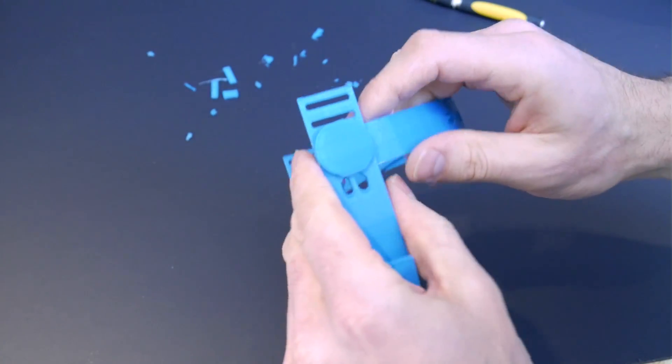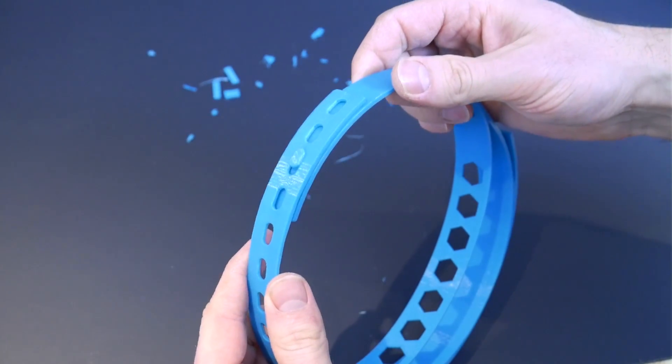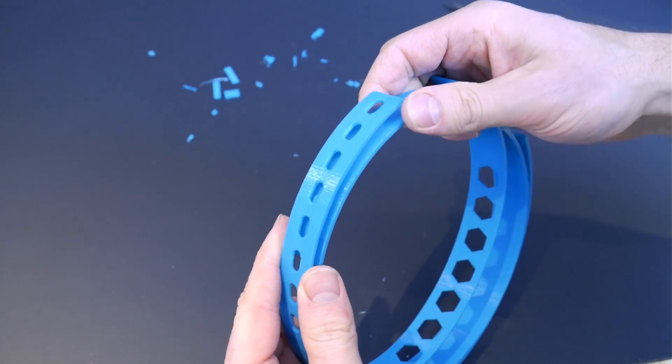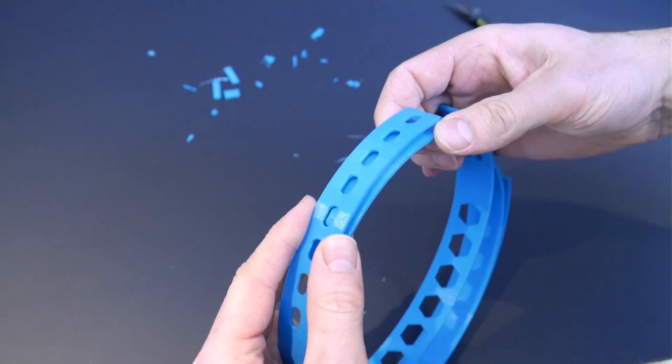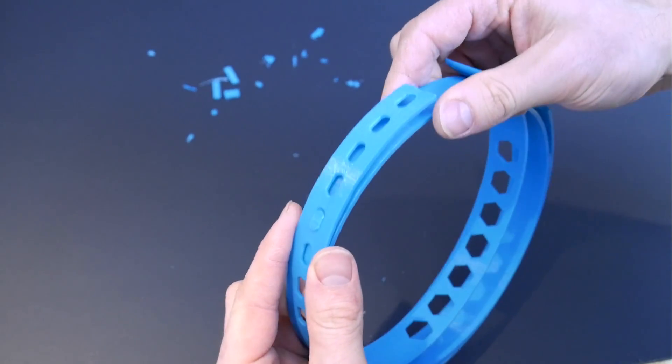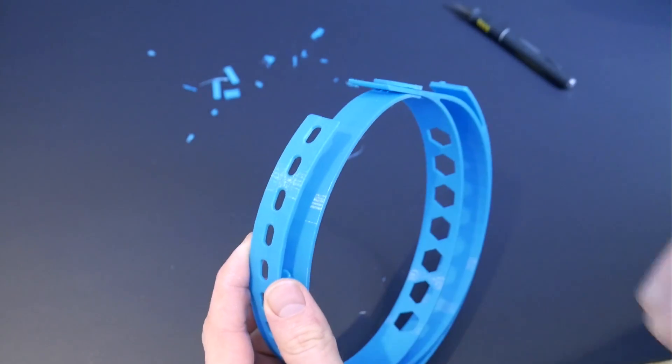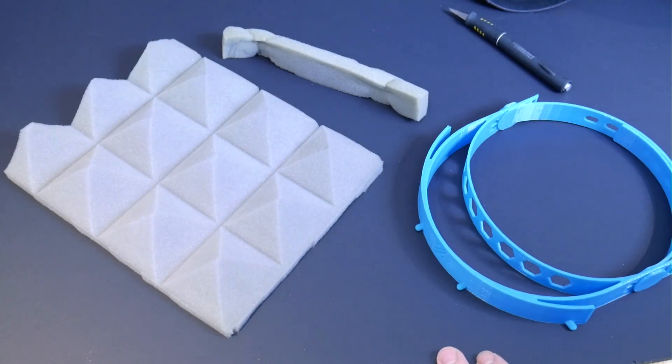With the bands free, you can now insert and secure the headband clasp. If you notice here, there's actually only one clasp in this earlier prototype, but in the final CAD model which I've released, there's two clasps for a more secure connection.